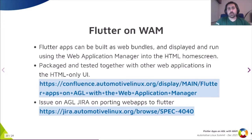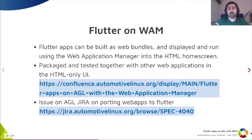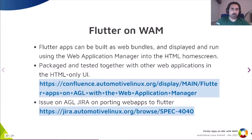Flutter has the capacity to, from the same code, specify the target for which an application can be built. One example is compiling it as a web application — you can run the same code you run for desktop natively into a browser — which allows it to be run wrapped in the application structure of AGL and into the image on supported platforms like QEMU for local development and testing.